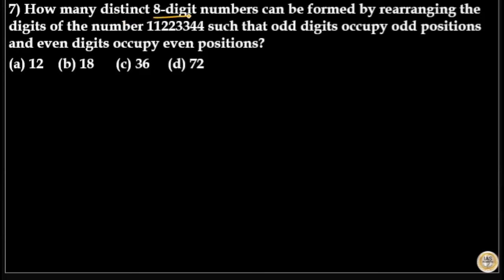How many distinct eight-digit numbers can be formed by rearranging the digits of the number 1,1,2,2,3,3,4,4 such that odd digits occupy odd positions and even digits occupy even positions?